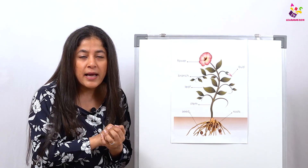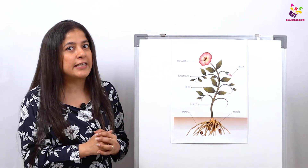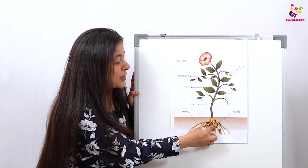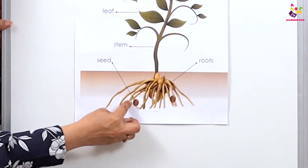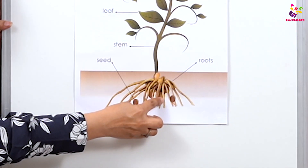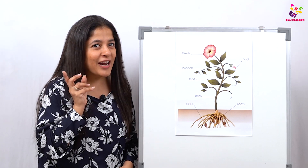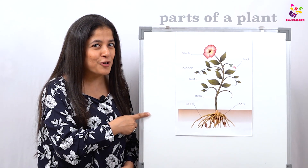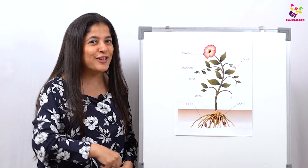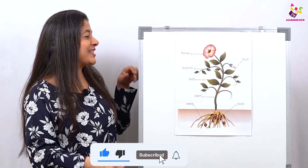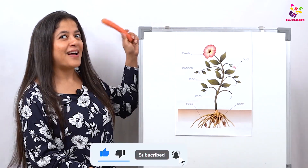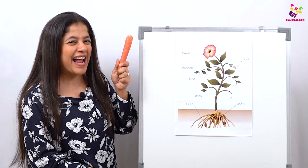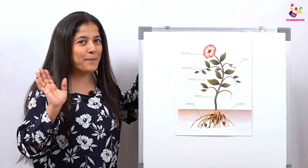Flowers have pollen and fruits have seeds in them which help the plant to grow — and you can see there are seeds here! If you all have learned the parts of a plant well, then don't forget to like, share, and subscribe. Until then, I'm going to go and eat my healthy carrot — see you soon, bye!